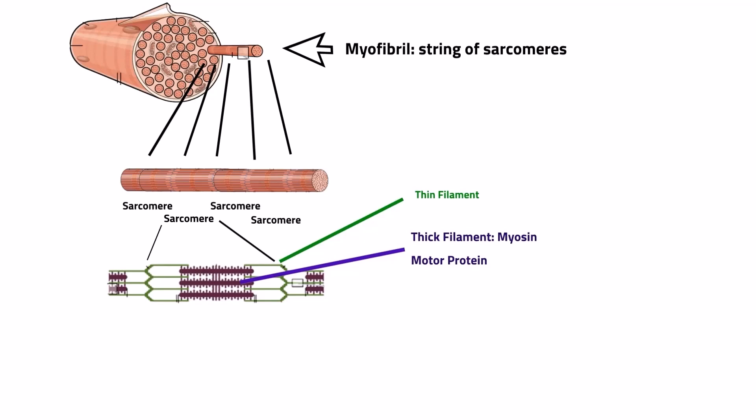Myosin is a protein that captures the energy from ATP and uses it to produce force and motion. We'll zoom in on a single myosin molecule to see how that works.